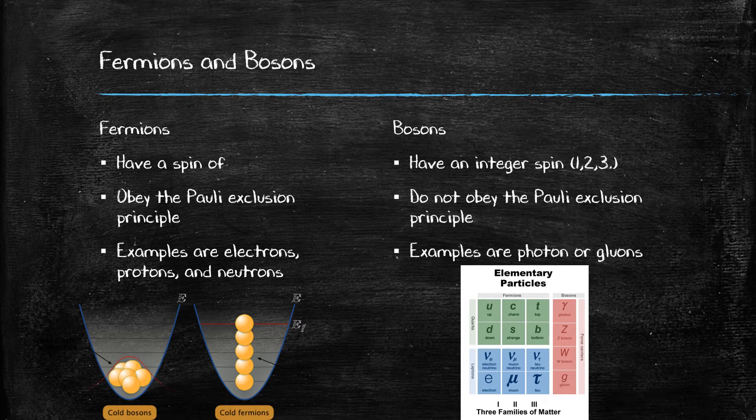An example of some fermions that one would know would be electrons, protons, and neutrons, which are the fundamental particles that atoms consist of.